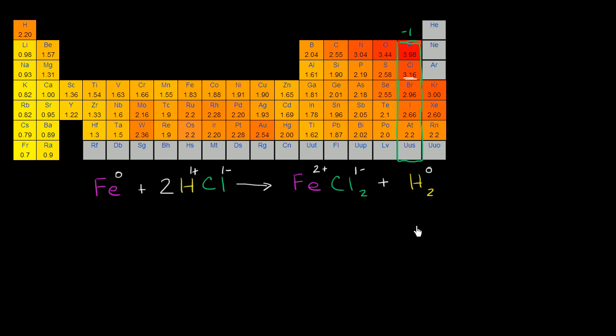Now let's think about the half reactions. Decide who's getting oxidized and who's getting reduced. So let's start with the iron. So the iron on the left-hand side, 0 oxidation number. And then on the right-hand side, iron has a positive 2 oxidation number.